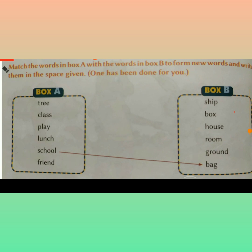So we studied the words. What are the words? School bag, tree house, lunch box, friendship. Take page number 18. Match the words in box A with the words in box B to form new words and write them in the space given. One has been done for you. Let's read the words from box A: tree, class, play, lunch, school, friend. Then box B: ship, box, house, room, ground, bag. Let's match the words from column A to column B.